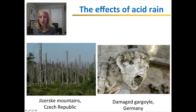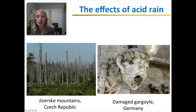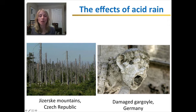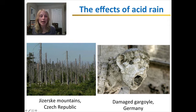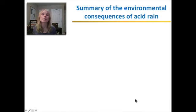Here are other consequences. This is a picture of the Jizerske Mountains in the Czech Republic, where all the trees died from acid rain. I'm originally from the Czech Republic and I remember seeing this in my childhood — it was very sad. Under communism there was big industrialization without proper air pollution controls, forming more acid rain. Other parts of Europe have also had this problem. Buildings and cars can also get damaged, such as this gargoyle statue in Germany.